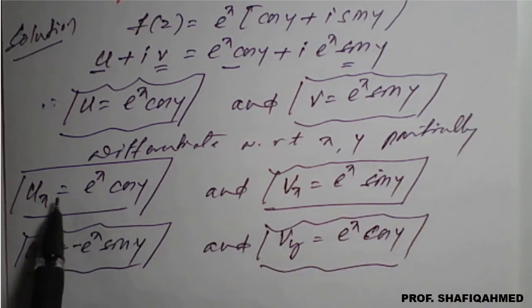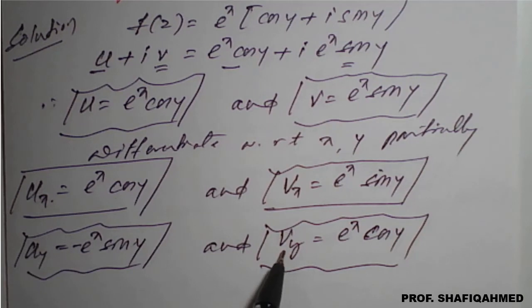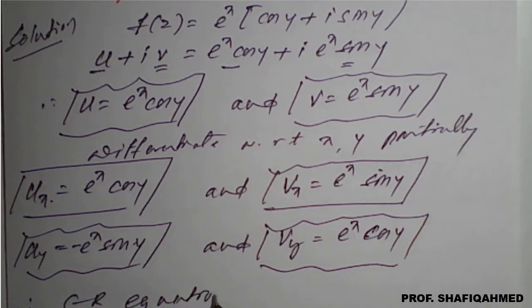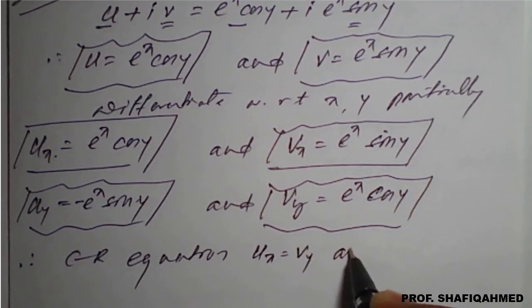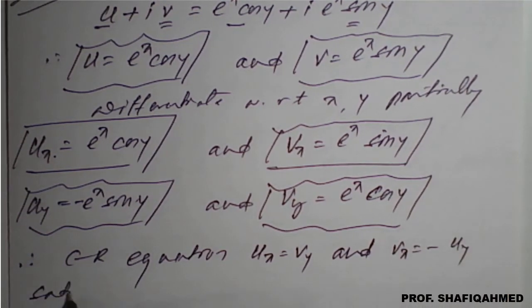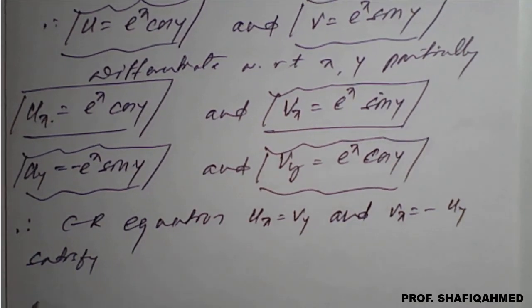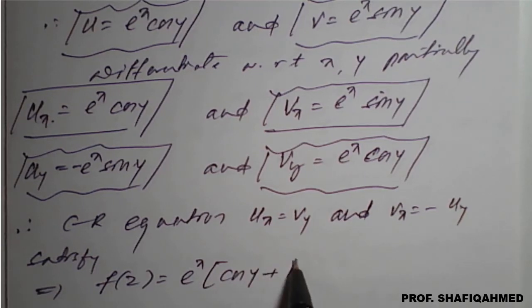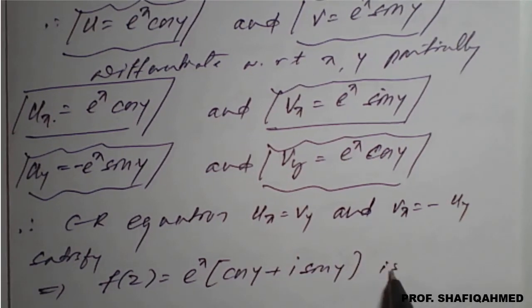We can observe here that u_x = e^x · cos y = v_y, and v_x = e^x · sin y = −u_y. Therefore, the Cauchy-Riemann equations — u_x = v_y and v_x = −u_y — are satisfied. Since the CR equations are satisfied, we can say that f(z) = e^x · (cos y + i·sin y) is analytic.